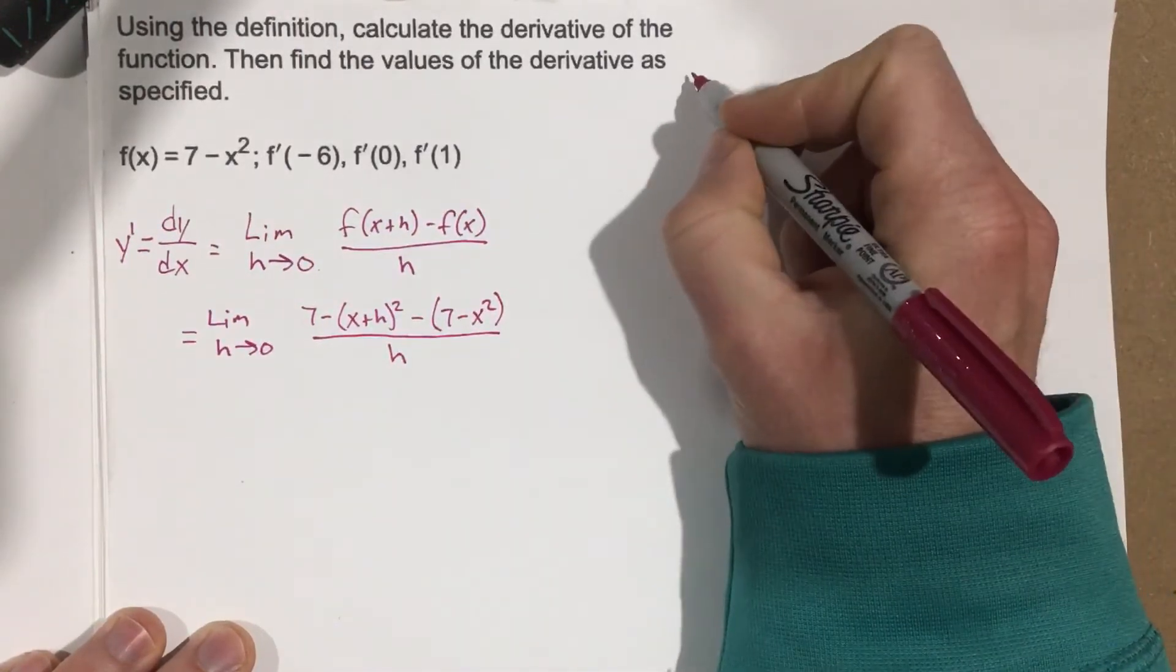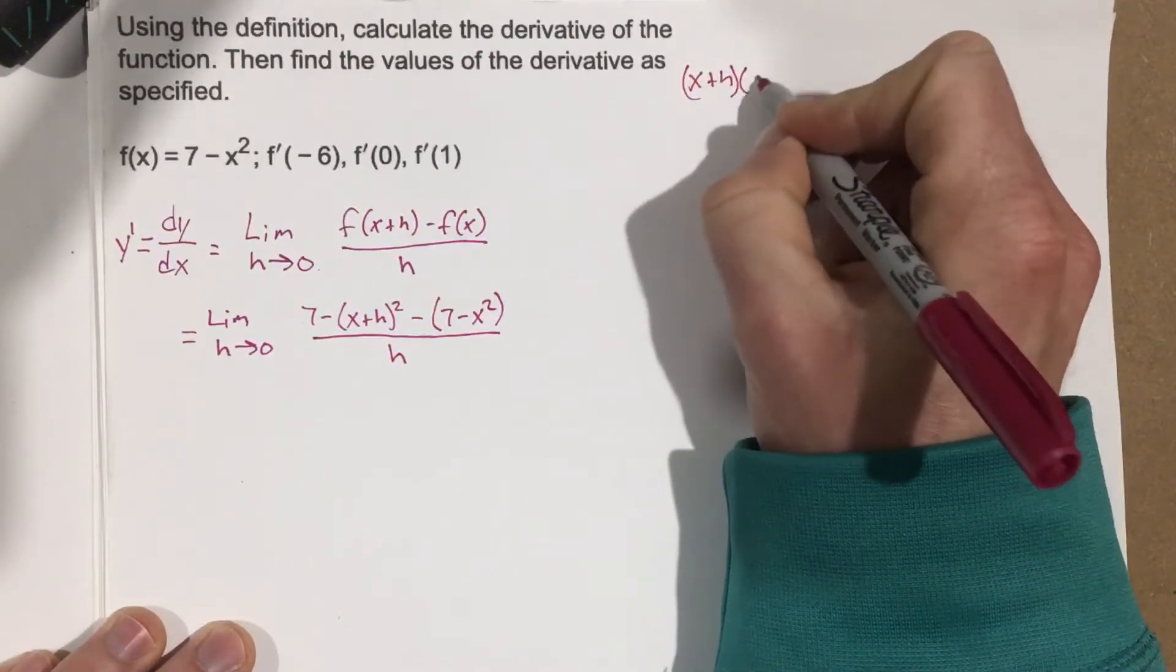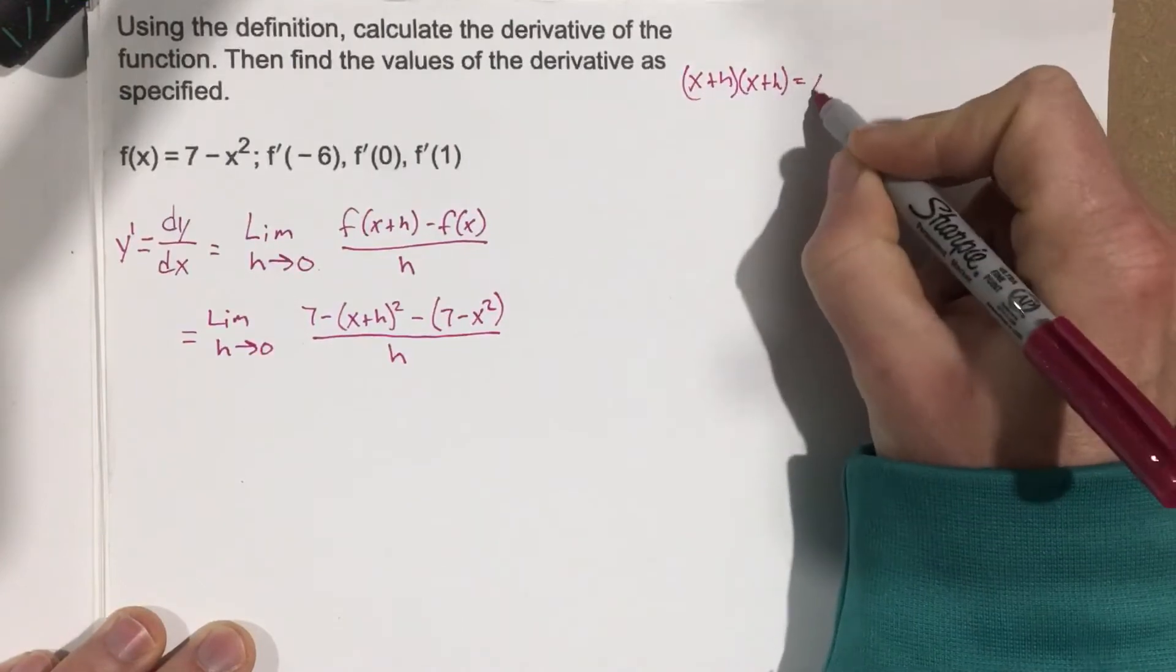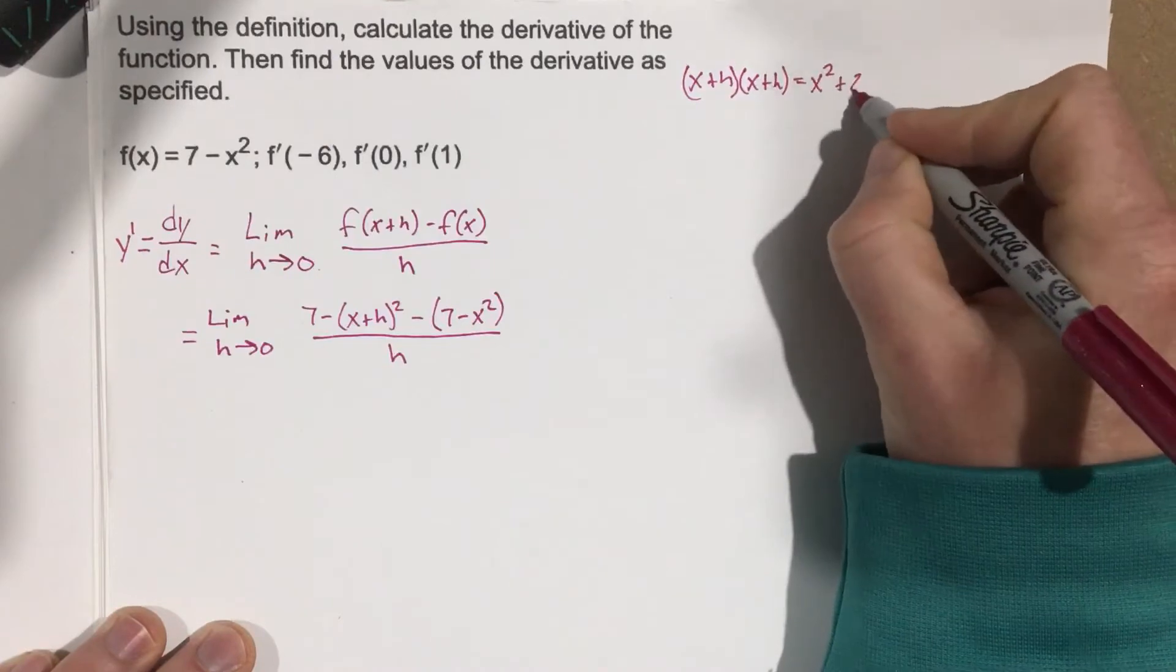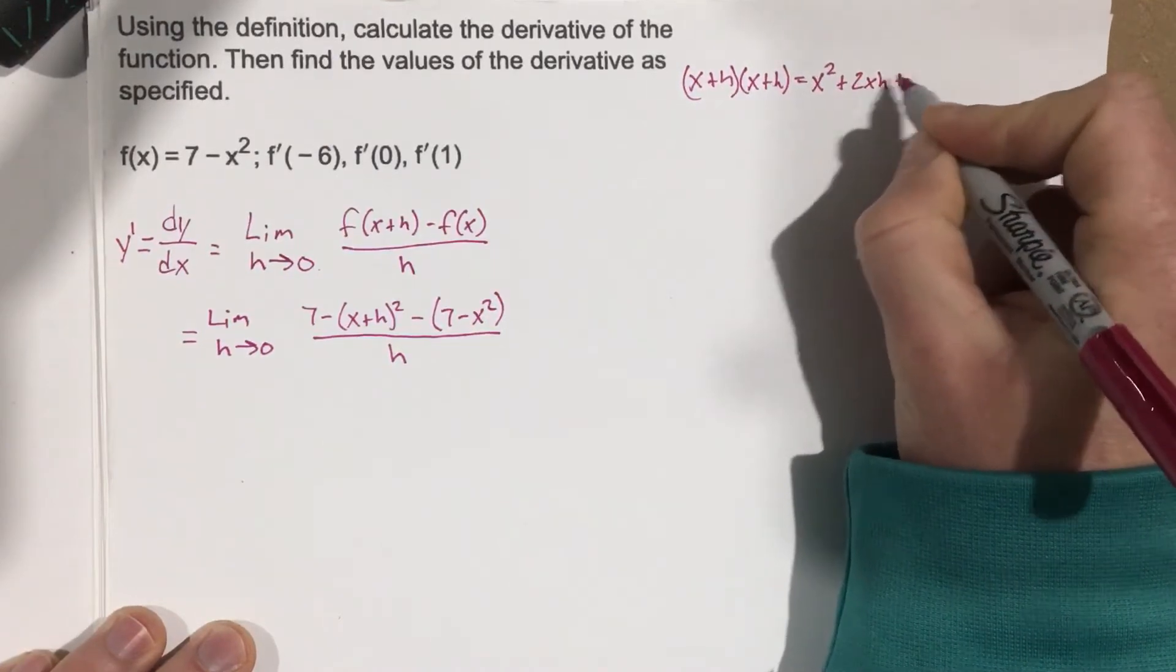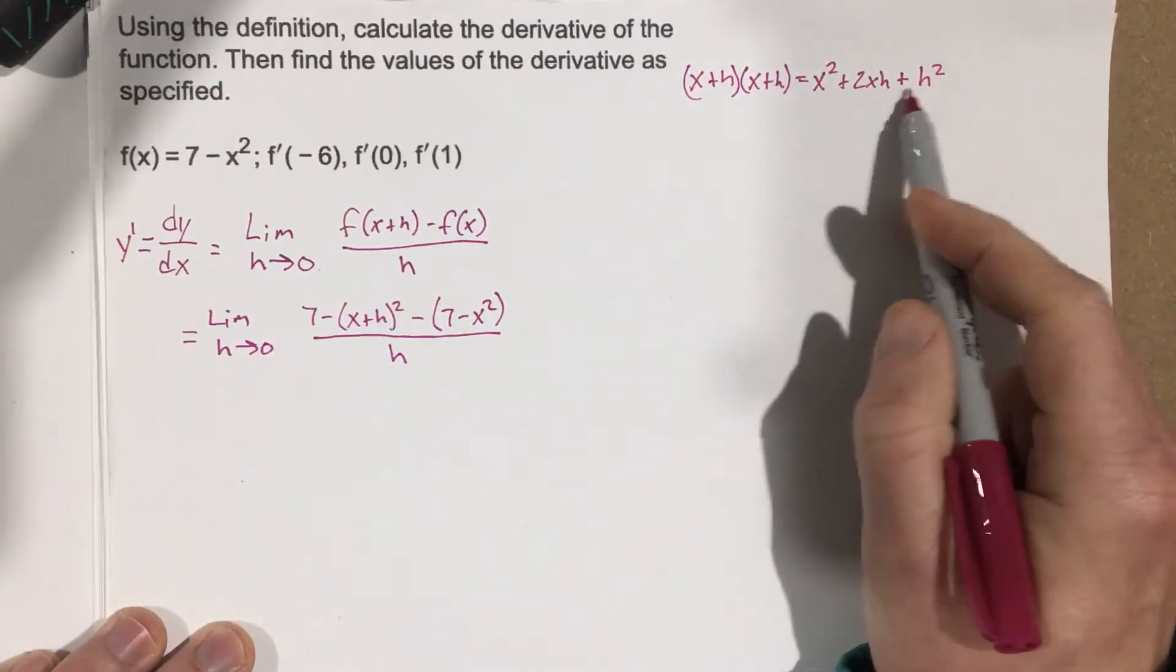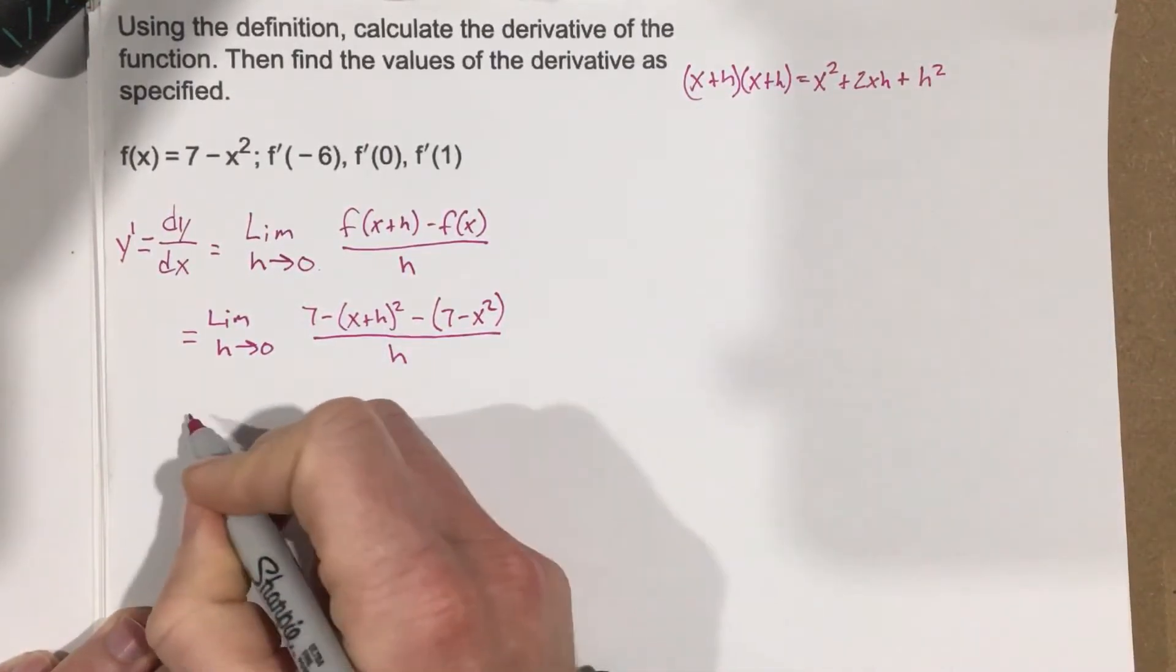Now, at the top here, we're going to take x plus h and square it, so it's multiplied times itself. That gives you x squared plus 2xh plus h squared. We're going to plug this in and replace x plus h squared.